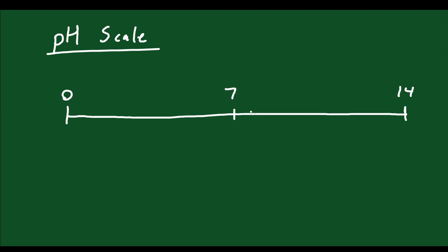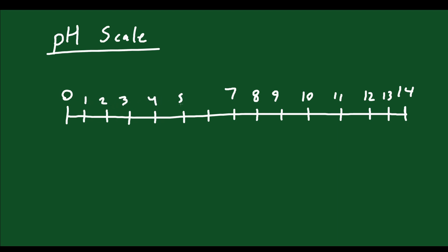On the pH scale, it goes from 0 to 14, with 7 in the middle — 7 being neutral. Underneath the scale, the values represent concentrations of 10 to the 0, 10 to the minus 1, 10 to the minus 2, 10 to the minus 3, and so on. At pH 7, you have 10 to the minus 7; at pH 14, you have 10 to the minus 14. These represent the pH values along the scale.